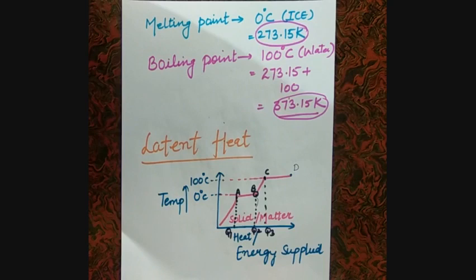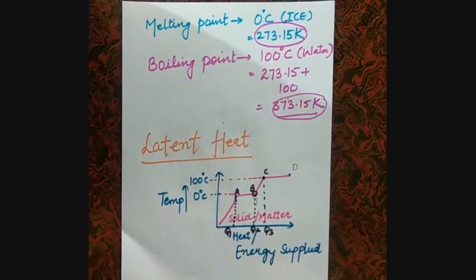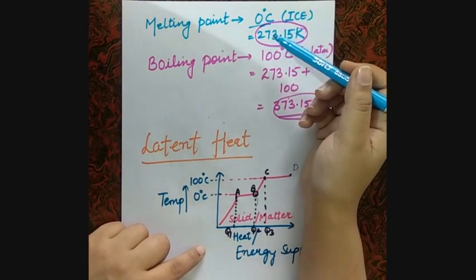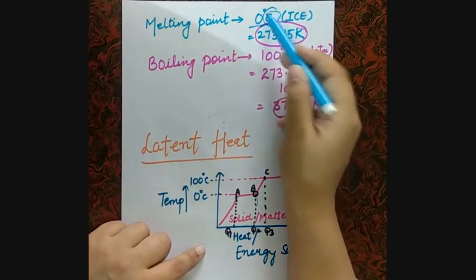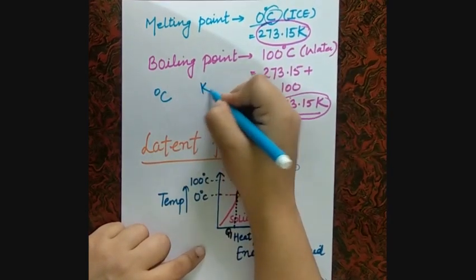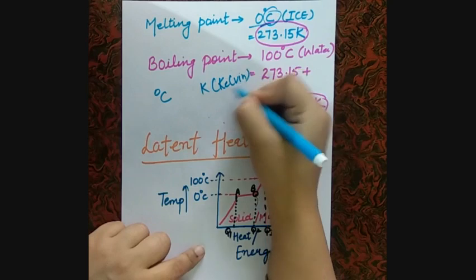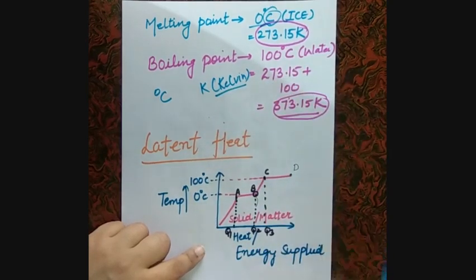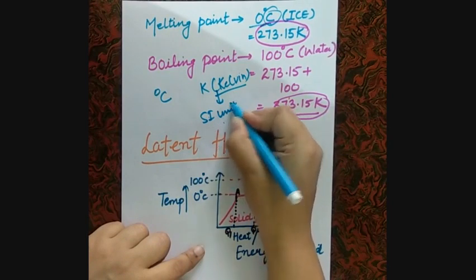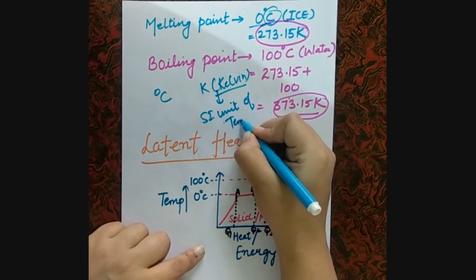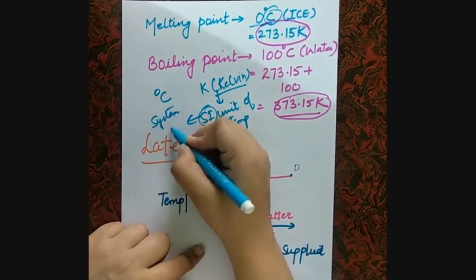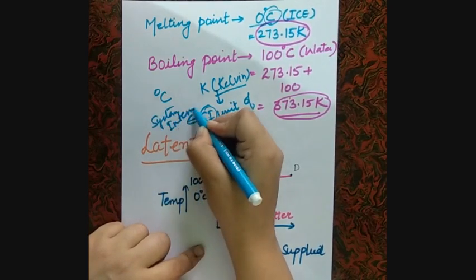The melting point of ice is 0°C. We have two scales of temperature: Celsius and Kelvin. Kelvin is the SI unit of temperature. SI means System International — internationally accepted. We call it Kelvin. Whenever we do numericals, we prefer to convert to Kelvin.